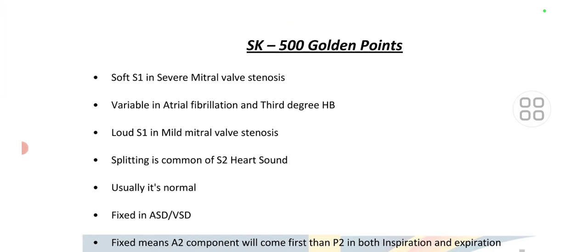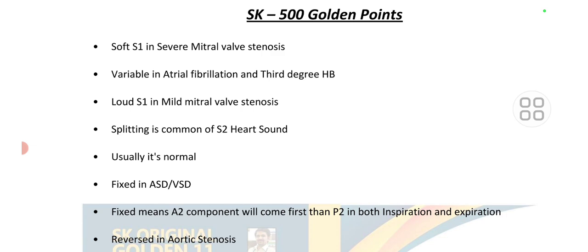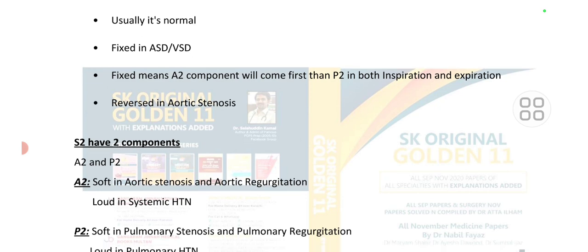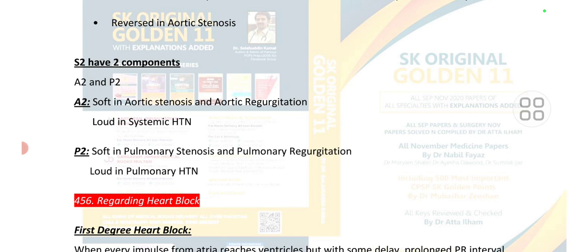Point number 455 is regarding CVS pathology. Soft S1 is a feature of mitral valve stenosis, variable in AF and third-degree heart block. Loud S1 is seen in mild mitral valve stenosis. Splitting is common for S2. Fixed splitting occurs in ASD and VSD; reversed splitting occurs in aortic stenosis. S2 has two components: A2 and P2. A2 is soft in aortic stenosis and aortic regurgitation, loud in systemic hypertension, and soft in pulmonary stenosis and pulmonary regurgitation.